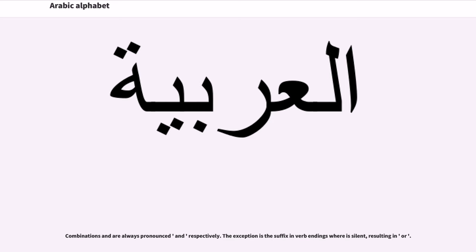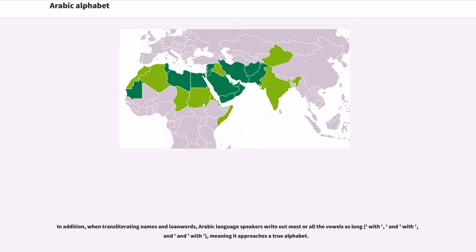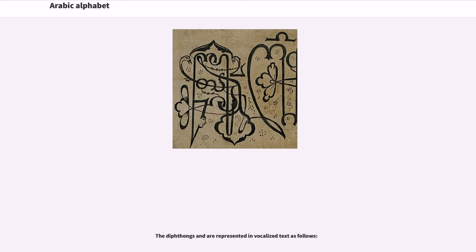The combinations waw and ya are always pronounced as their respective vowels. The exception is the suffix and verb endings where alif is silent, resulting in 'a' or 'aa'. In addition, when transliterating names and loan words, Arabic language speakers write out most or all the vowels as long, meaning the script approaches a true alphabet. The diphthongs are represented in vocalized text accordingly.